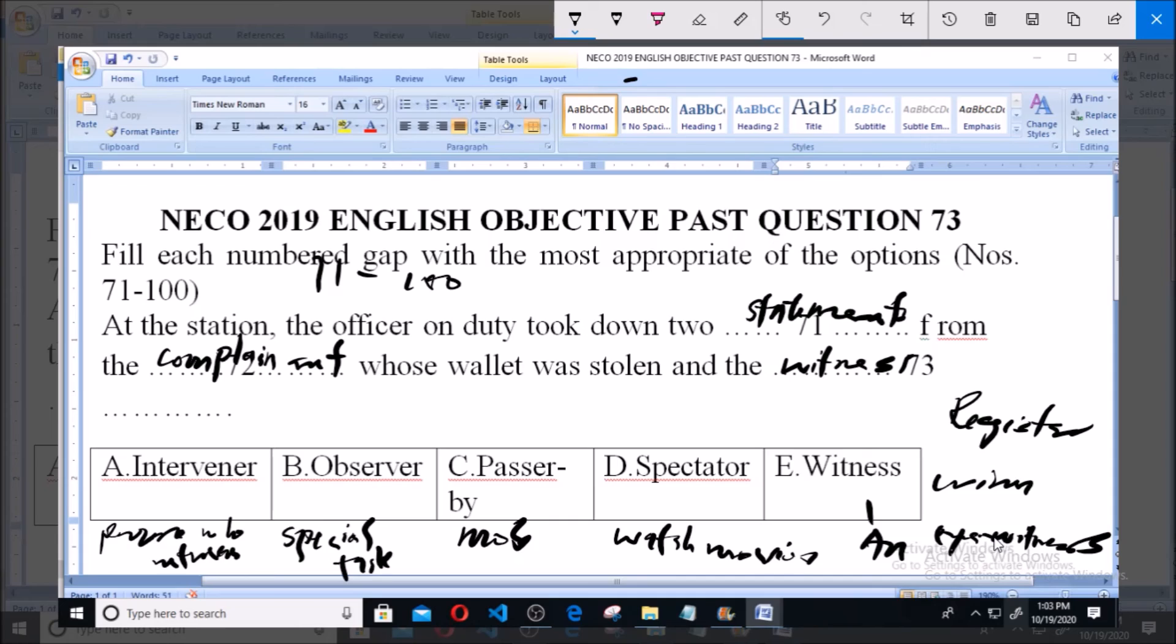Now you remember we are talking about two statements. One is for the complainant and the second statement is for the eyewitness, somebody who was there when the wallet was stolen. So option E is correct. Thank you and God bless you. Kindly subscribe for more videos.